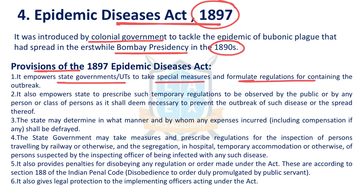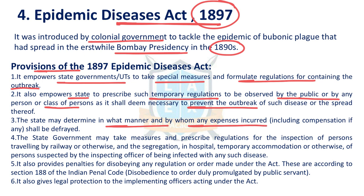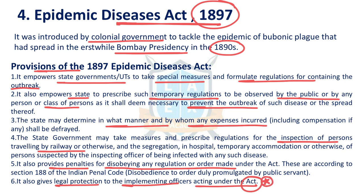The Act empowers states to prescribe temporary regulations to be observed by the public or a group of individuals to contain or prevent an outbreak. States may determine how expenses incurred to curtail outbreaks are managed. State governments may allow inspection of persons travelling by train. Penalties are provided for disobeying regulations and orders made under the Act, and it also provides legal protection to implementing officers. Lockdowns were imposed under this Act.